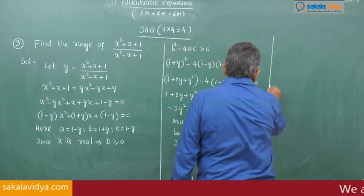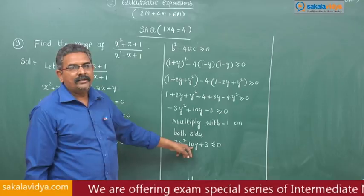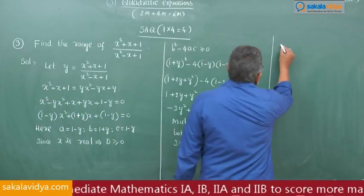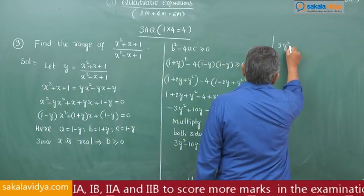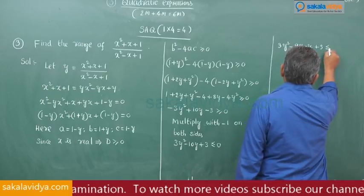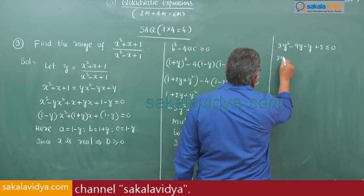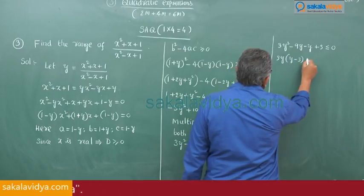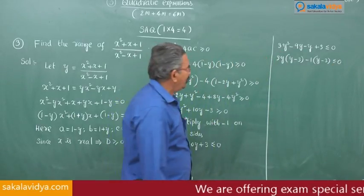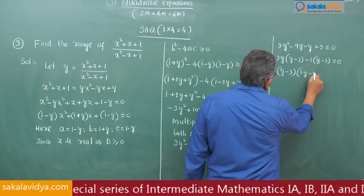Splitting the middle term: 3×3 = 9, so -10 splits as -9 and -1. We write 3y² - 9y - y + 3 ≤ 0. Taking 3y common from the first two terms: 3y(y - 3) - 1(y - 3) ≤ 0.